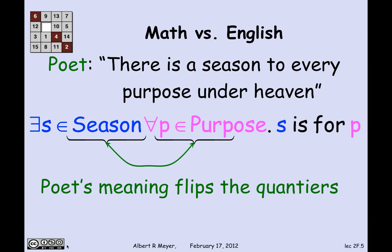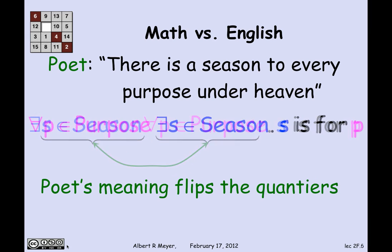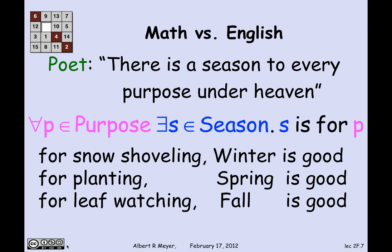In fact, the poet really means to flip the quantifiers: for every purpose, there is a season such that S is for P. For snow shoveling, winter is good. For planting, spring is good. For leaf watching, fall is good. And that is the intended translation — although I remind you of the famous historical man Sir Thomas More, who was described as 'a man for all seasons.' That would be a case where there was one man good for all purposes: a polymath, a writer, a cleric, and chancellor of England, until he had a falling out with Henry VIII, which served him ill.